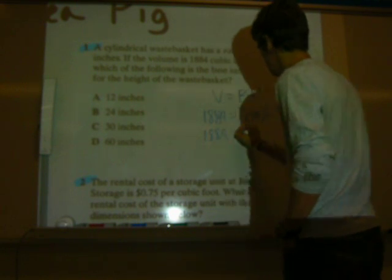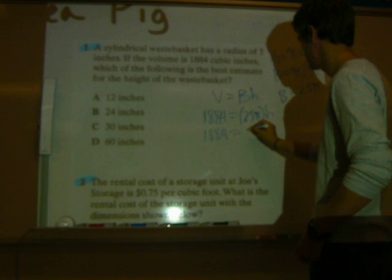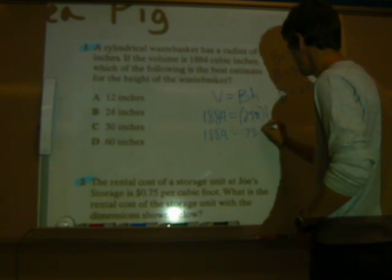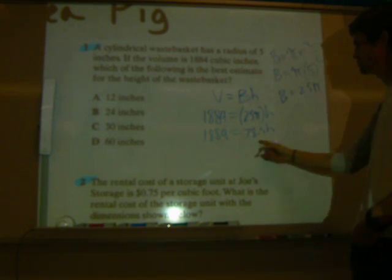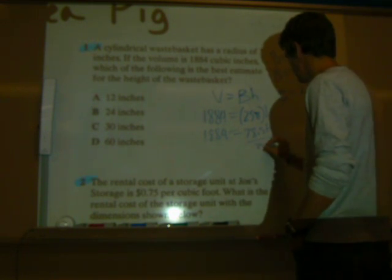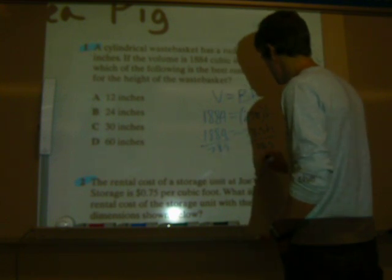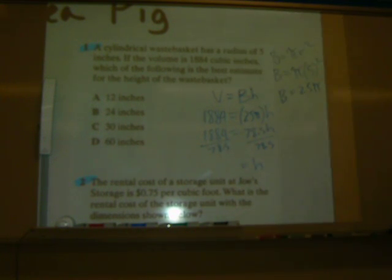So, we have 25 pi, and we're looking for h. Let me reduce this 25 pi even more. What is 25 pi? So, 25 pi is going to be 78.5. When you do that, so 78.5 h. Now, all you have to do is divide by that 78.5 to get that h alone. Divide by 78.5. Therefore, h is going to equal...